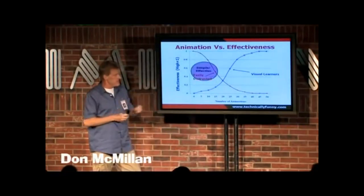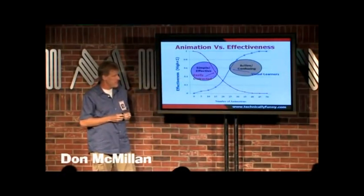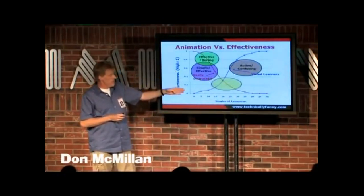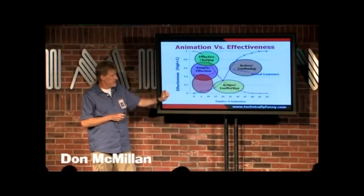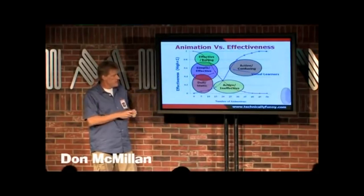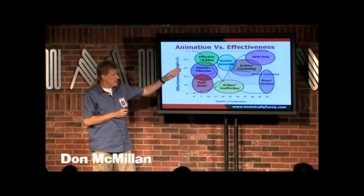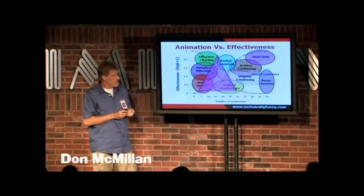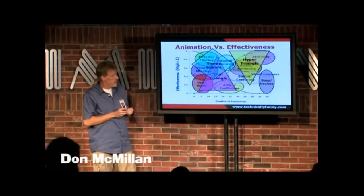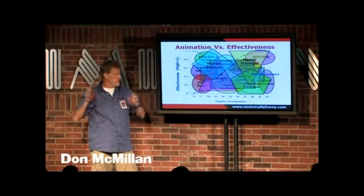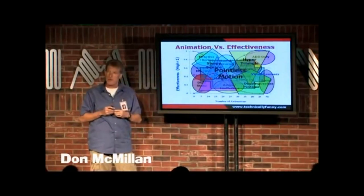There are regions to this graph: the simple but effective region, the active but confusing, the effective but boring, the active but ineffective, the dull but static region, the busy but useful region, the ADD-only region up in the corner, the useful music, the stupid confusing, the dull triangle, the hyper triangle, the sleepy square, the dizzying pentagon — and then everything else is just grouped into what's called pointless motion.